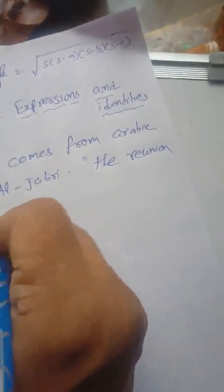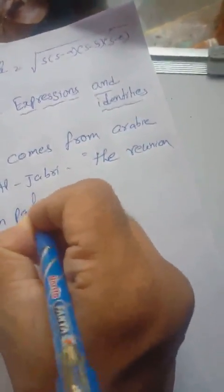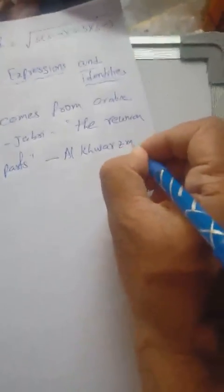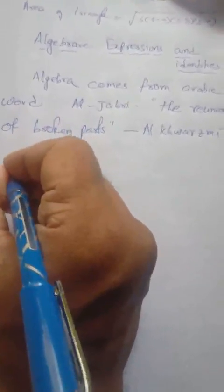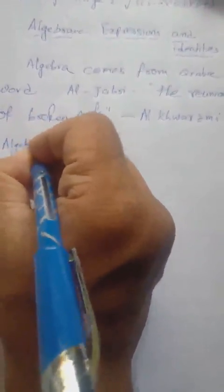This term was given by Al-Khwarizmi, spelled A-L-K-H-W-A-R-Z-M-I. Al-Khwarizmi is considered the father of algebra. In algebra, what happens is the operation of literals.